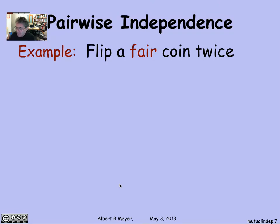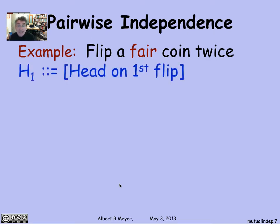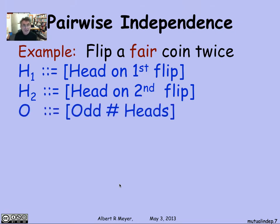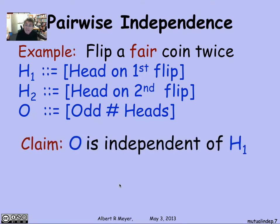Let's look at an example. Suppose I flip a fair coin twice — heads and tails are equally likely. Let H1 be the event that a head comes up on the first flip, H2 the event that a head comes up on the second flip, and let O be the event that there were an odd number of heads in the two flips. I claim that O is independent of whether or not there's a head on the first flip. That may seem weird, because O depends on both the first and second flip, but nevertheless I claim they are independent.